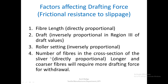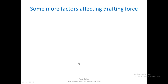Drafting force also depends on the number of fibers in the cross section of the sliver, which is almost directly proportional — more fibers in the cross section means more drafting force, as they restrict the movement of the fast-moving fibers. Additionally, longer and coarser fibers require more drafting force for their withdrawal. As fiber length increases, drafting force increases, and if the fibers are coarser, more drafting force is required for their withdrawal.